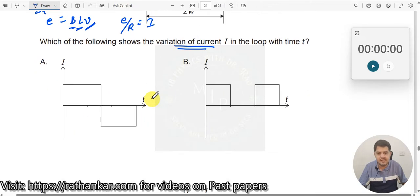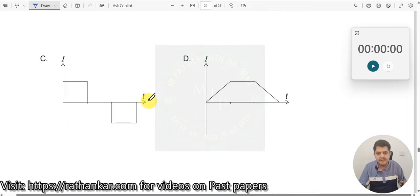Let us look at which of these graphs shows you the constant. This graph shows you the constant. This also shows you the constant. This shows you constant. This is not constant. I is increasing here. So this is not the right answer.